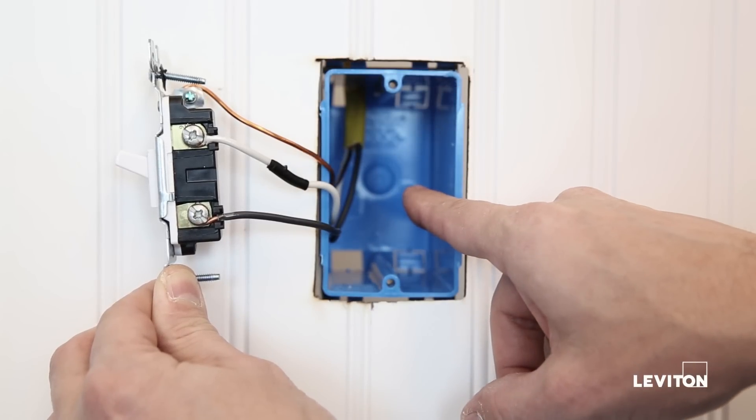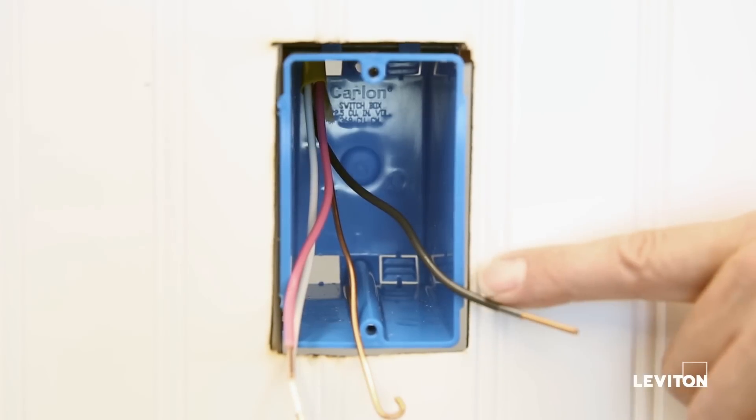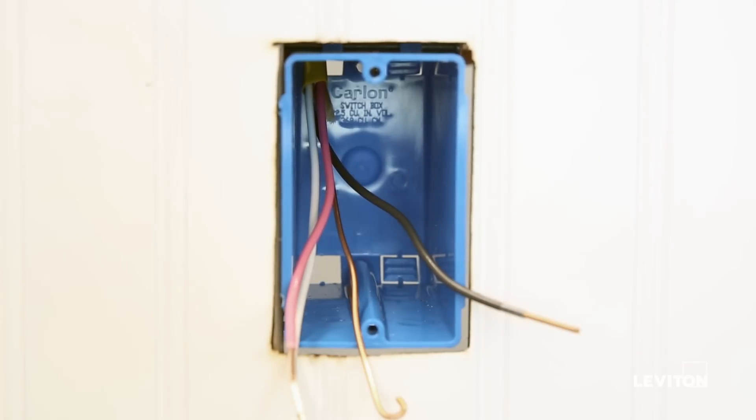If the controlled leads are white, black, and there is a red, it may be a fan light application or other wiring configuration.